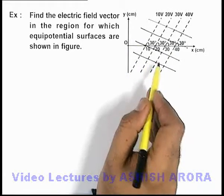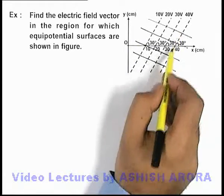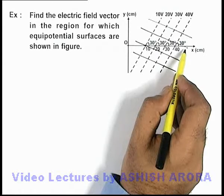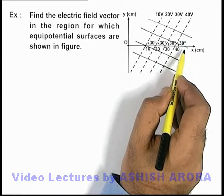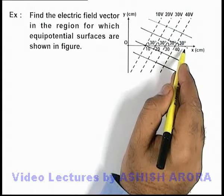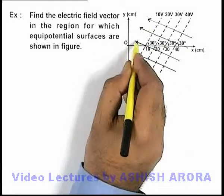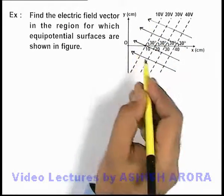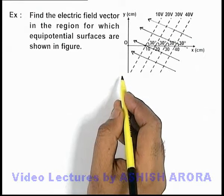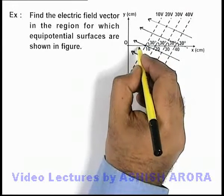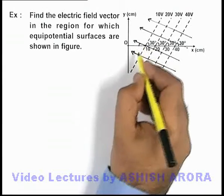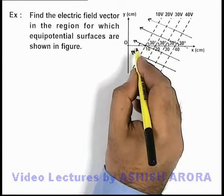Because here equipotential surfaces are parallel and equidistant, that means the electric field must be uniform. And as electric field always exists in the direction of low potential, the direction of electric field could be like this which we have drawn here. And the angle of electric field with the direction of x-axis we can give as 60 degrees.